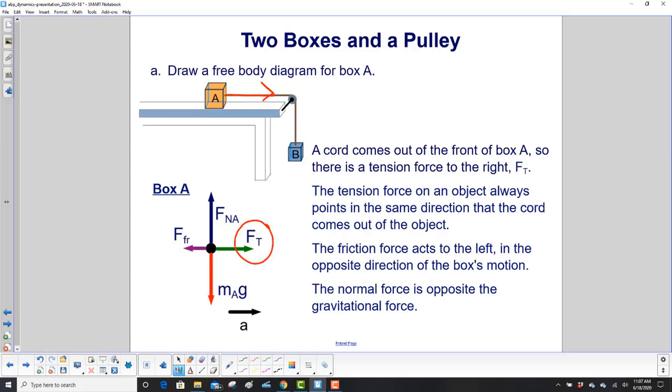The tension force on an object always points in the same direction that the cord comes out of the object. The friction force acts to the left in the opposite of the box's motion. And then of course, we have the normal force and the gravitational force up and down.